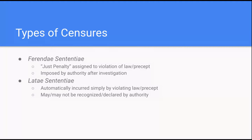So let's take the example of breaking the seal of confession. If a priest ever breaks the seal of confession, it incurs an automatic — that's latae sententiae — excommunication. The priest is excommunicated from the moment he breaks the seal of confession. Whereas if a non-confessor like myself, whoever hears a confession, decides to reveal the confession or the identity of the person, I incur a just penalty, which means I must be found out, it must be investigated, and the bishop must impose a penalty upon me.